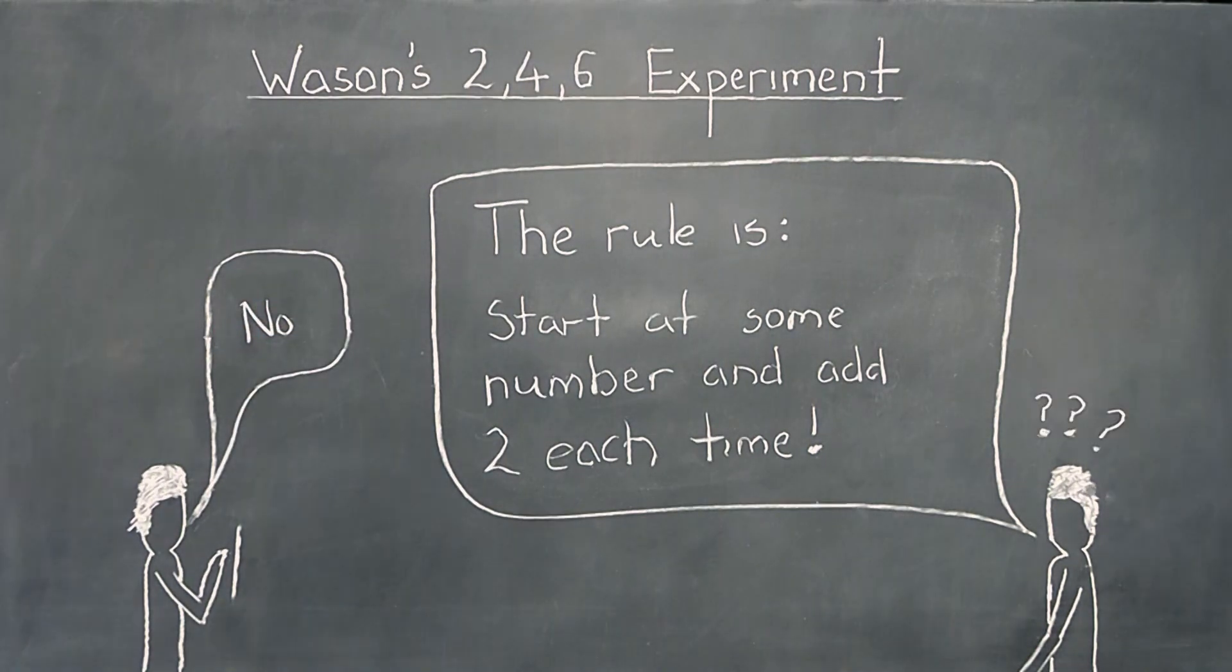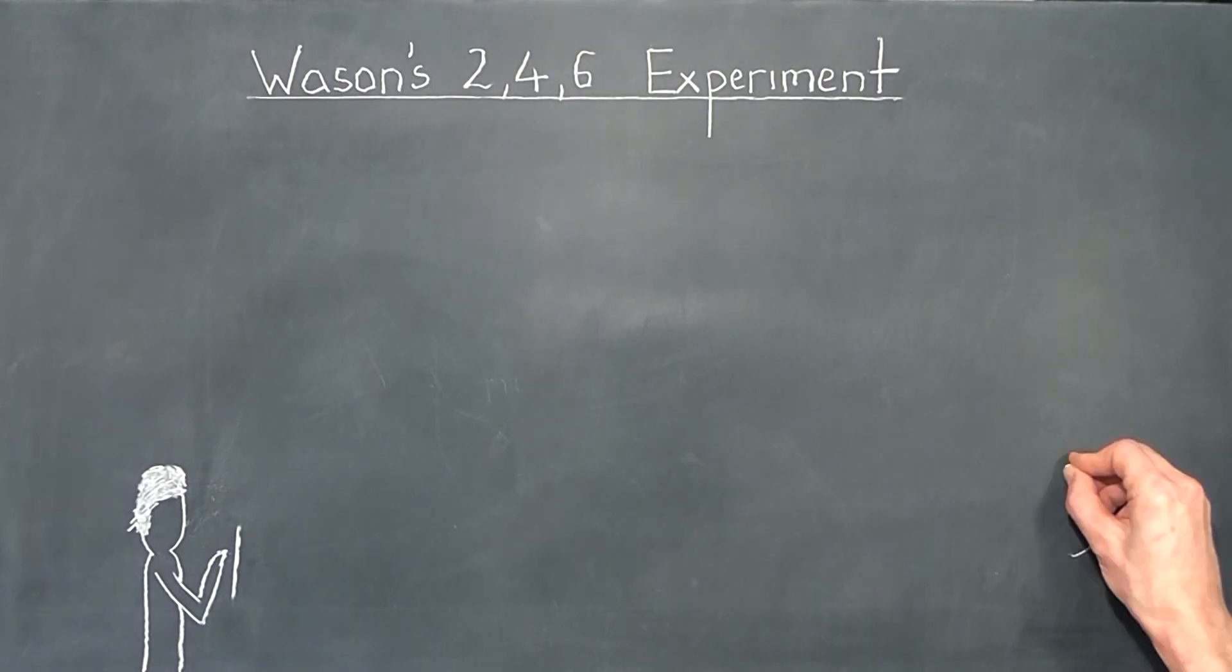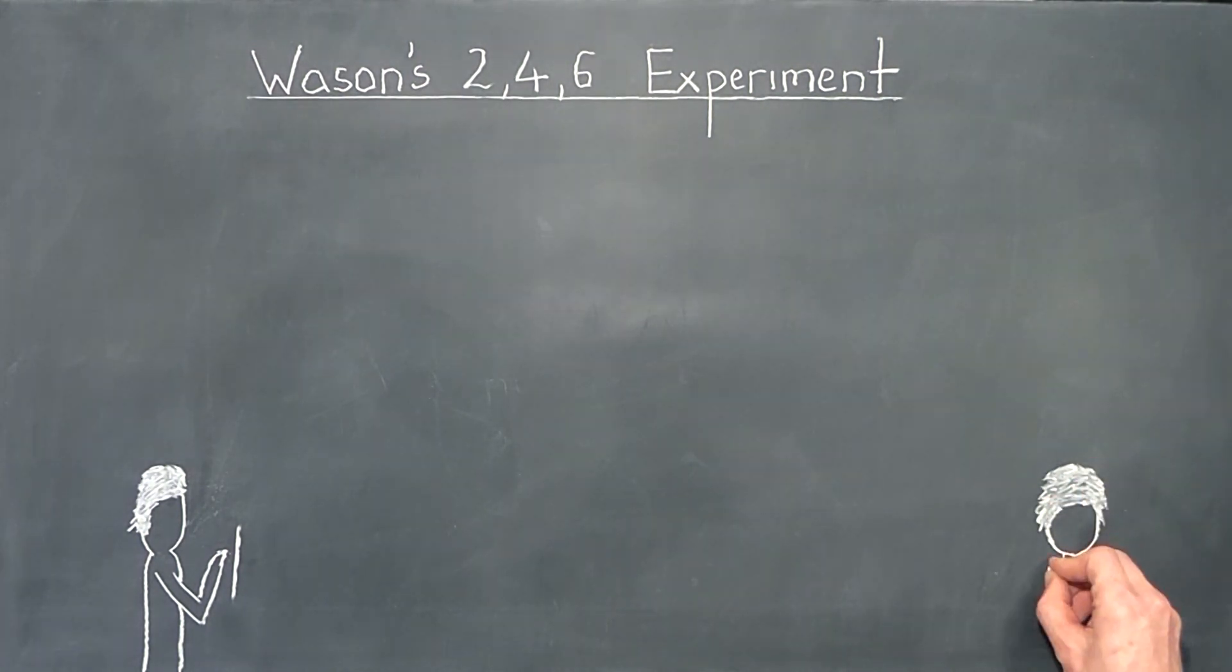In other words, most of us approached the problem the same way Instinctive Ian would approach the problem, by using the Instinctive Intuitive System 1 part of our brain. There's a fatal problem with this approach. Let's stop for a moment to think about how Skeptical Stan may have approached the problem.